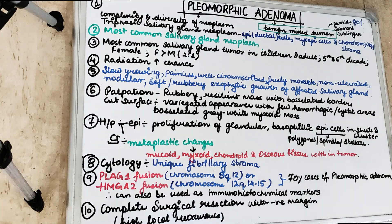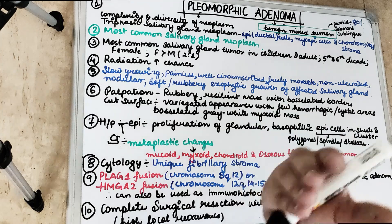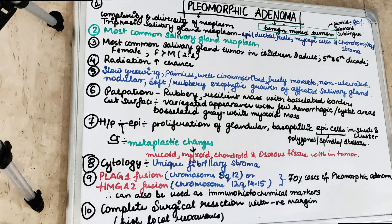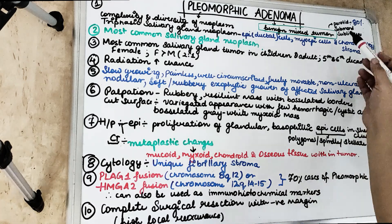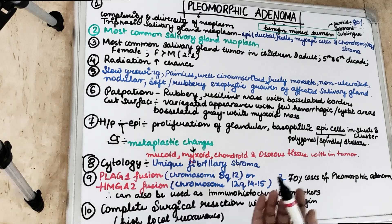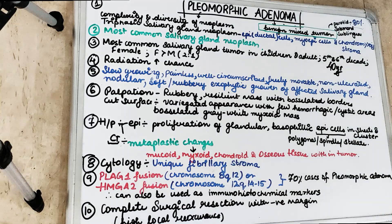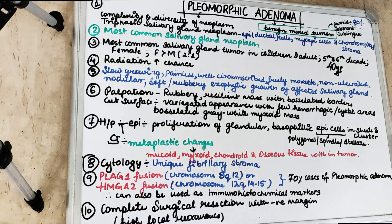This is the most common salivary gland neoplasm and it can involve any salivary gland — parotid, submandibular, sublingual, and even minor salivary glands such as those in the upper lip and cheek. However, 80% of cases involve the parotid gland. It can occur in children or adults, with a mean age of 40 years, most commonly from the third to sixth decade. Females have double the chances compared to males.